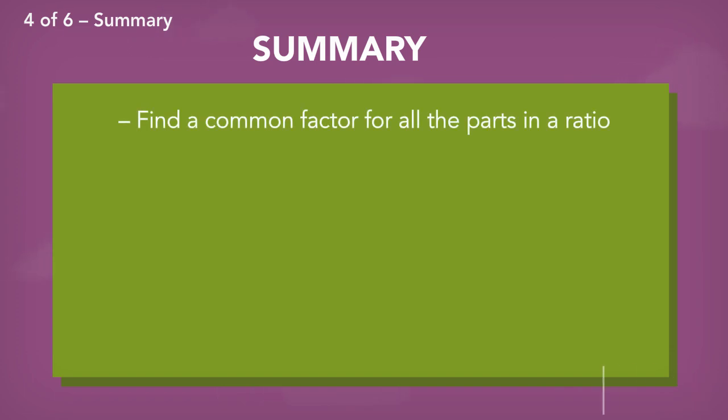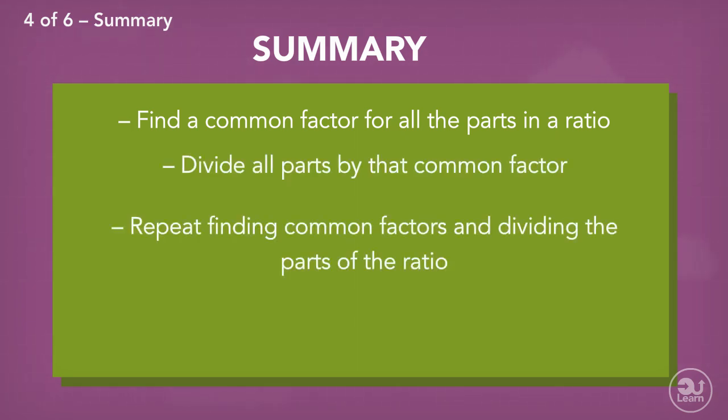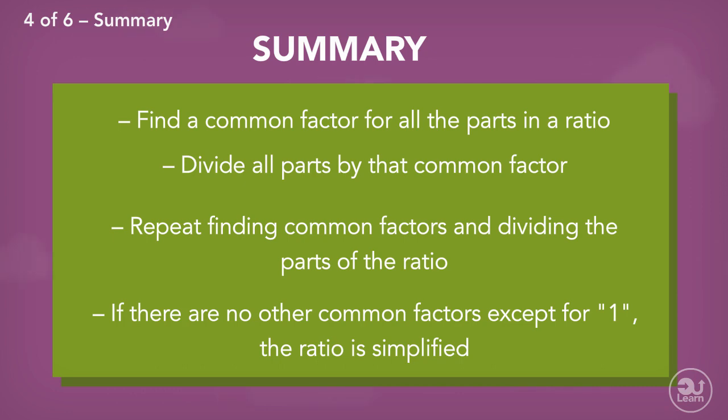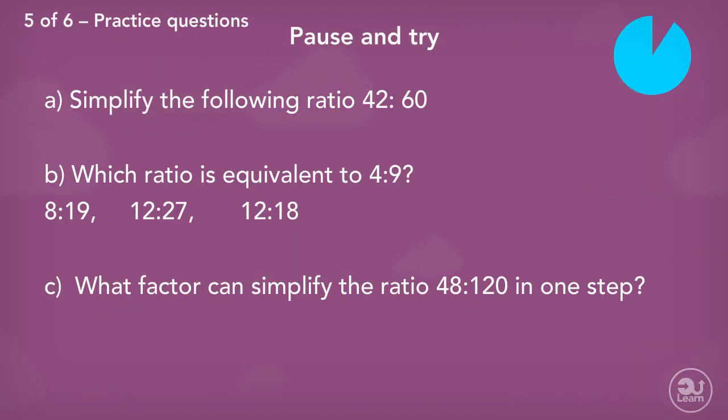So to summarize, when simplifying ratios, you would need to first find a common factor of all the parts in the ratio and proceed to divide the parts by that number. You repeat the process to see if there are any other common factors. If there are, continue to divide until the only common factor is one. Pause and try these questions yourself.